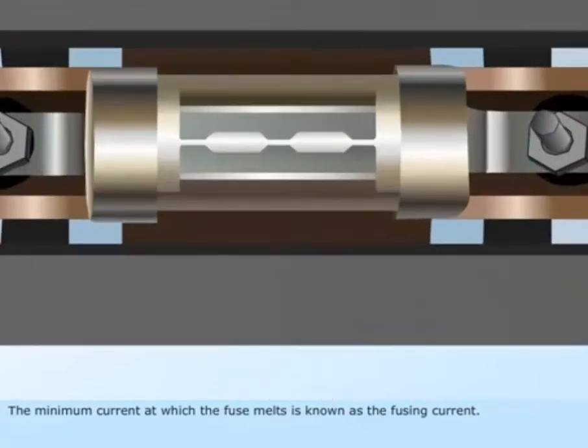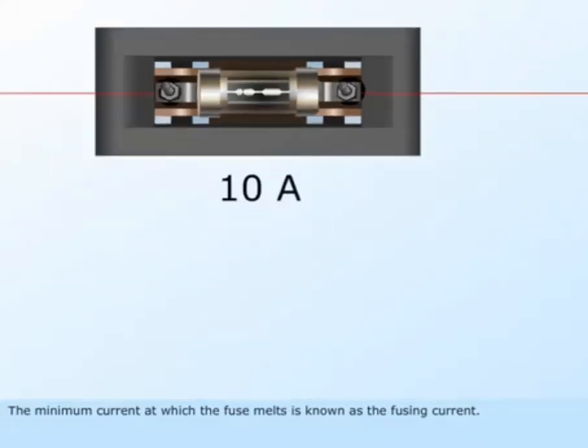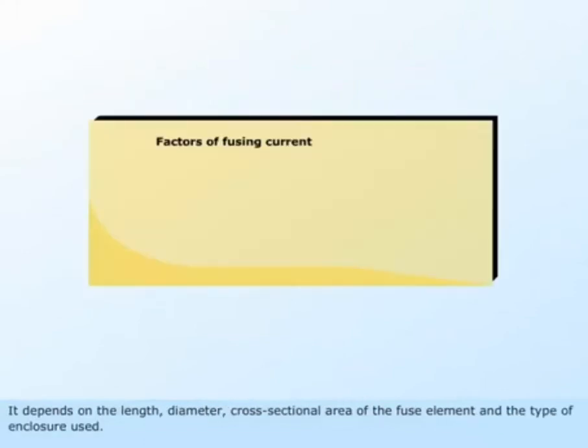The minimum current at which the fuse melts is known as the fusing current. It depends on the length, diameter, cross sectional area of the fuse element and the type of enclosure used.